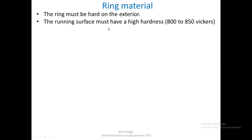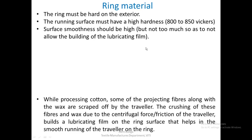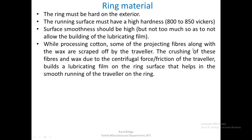The ring material must be hard on the exterior. The running surface must have a high hardness of 800 to 850 Vickers. The surface smoothness should be very high, but not so much that it does not allow the building of the lubricating film. While processing cotton, some of the projecting fibers along with the wax are scraped off by the traveler. The crushing of these fibers and wax due to centrifugal force and friction builds up a lubricating film on the ring surface.